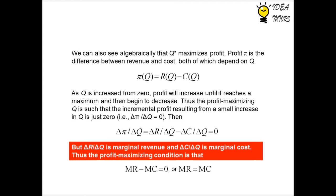We can also see algebraically that q* maximizes profit. Profit is the difference between revenue and cost, both of which depend on q. As q is increased from zero, profit will increase until it reaches a maximum and then begin to decrease.